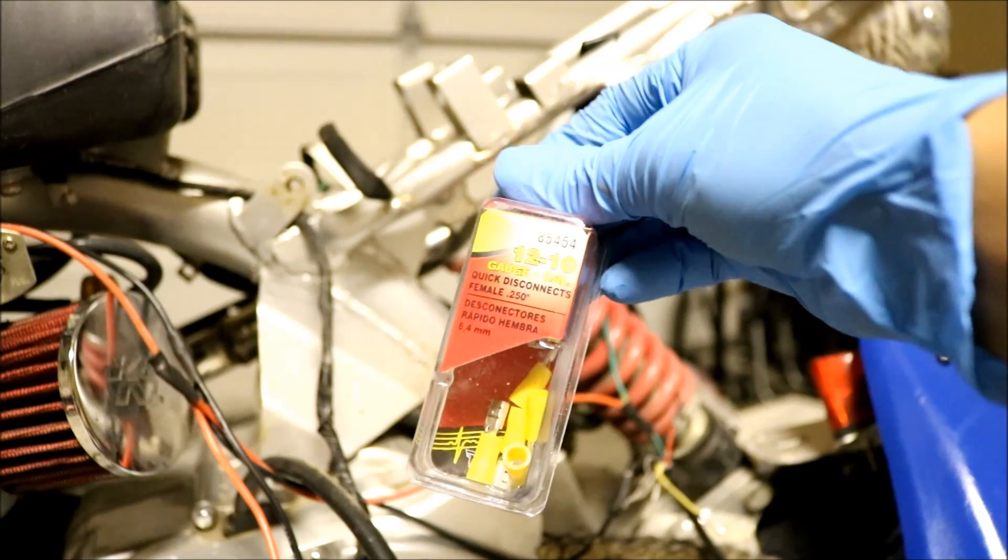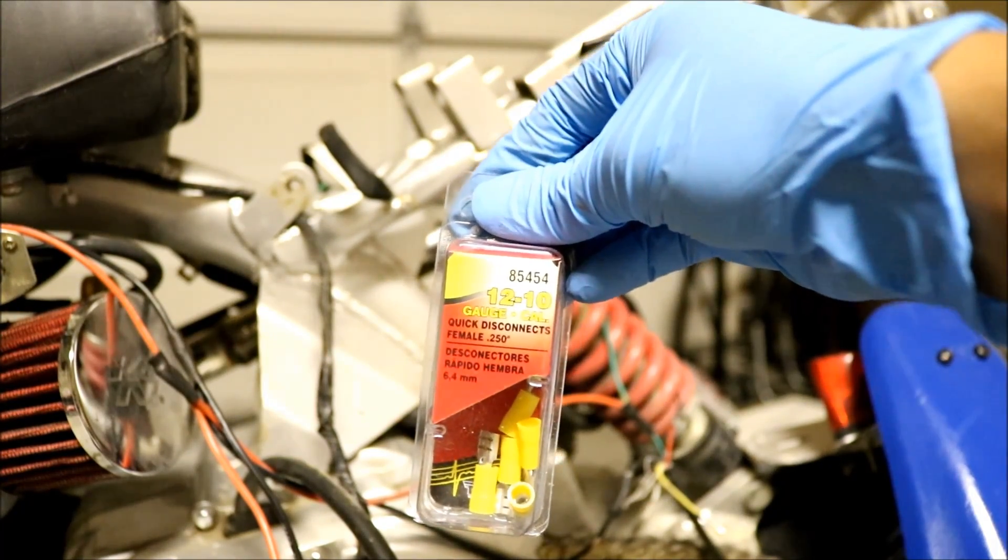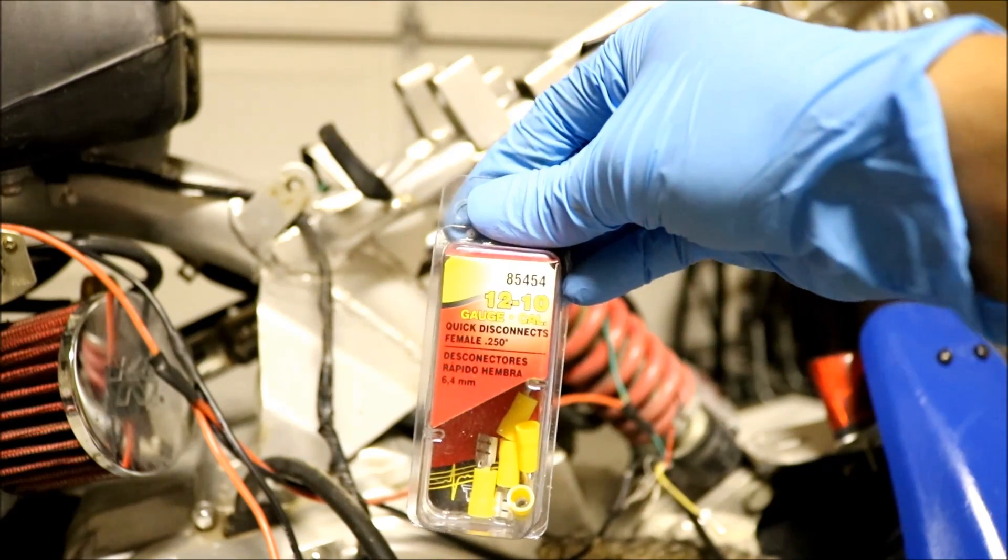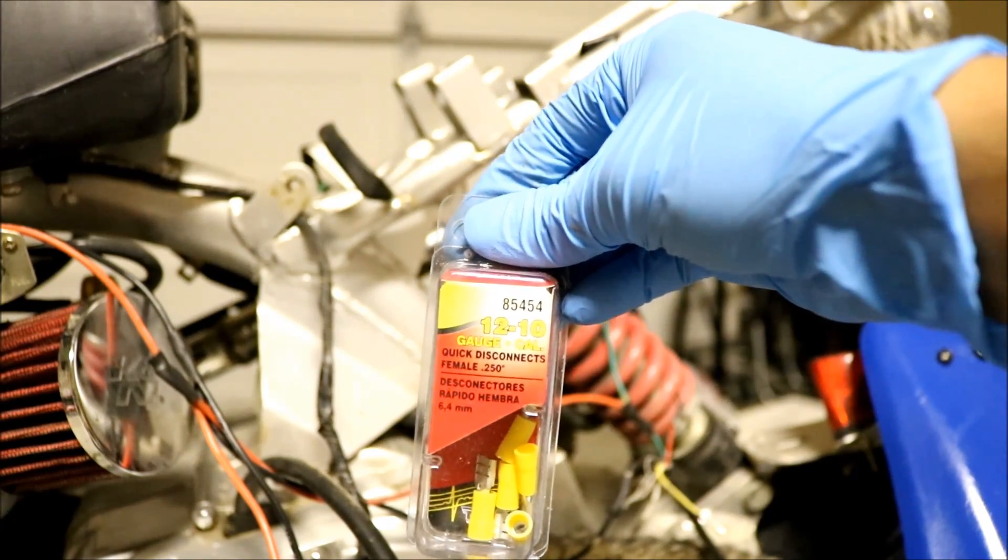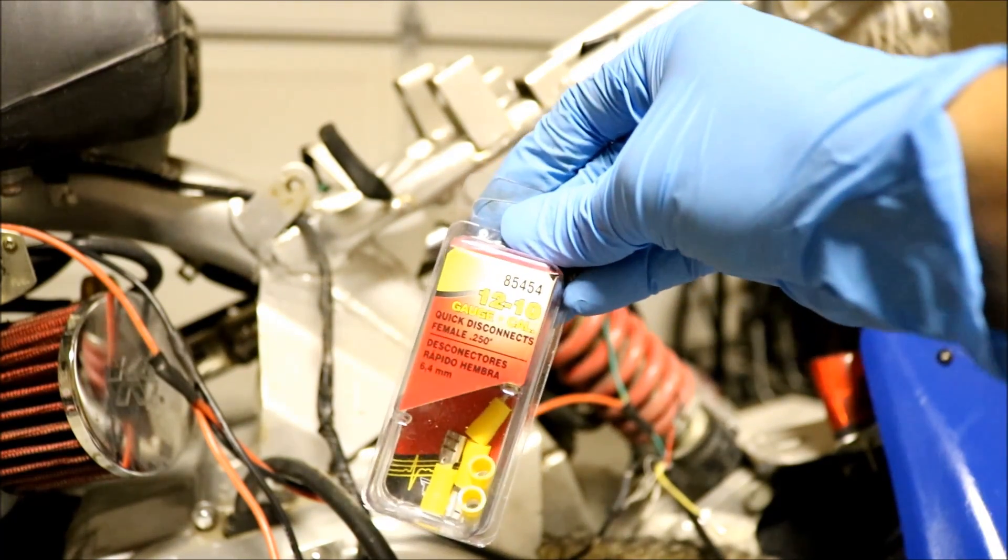So I also want to mention these are the connectors I'm using to connect the wires to the rectifier regulator. They're quarter inch female quick disconnects. I'm using twelve to ten gauge, but my wires are small so you might want to try something smaller.